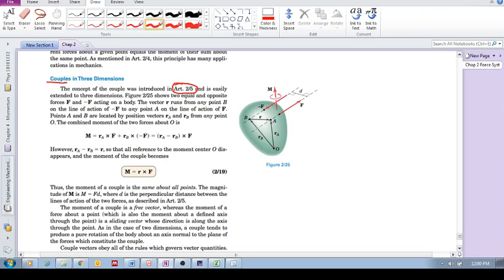We take moments about point O and sum them up. About point O we have RA cross F, from point O to any point along the line of action of F, and then RB cross minus F.